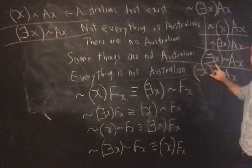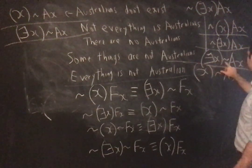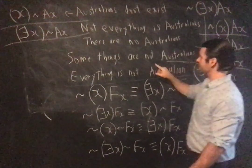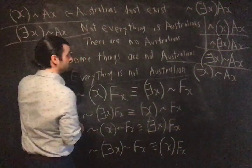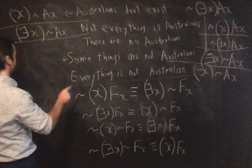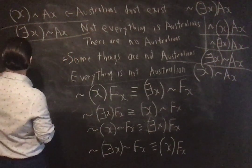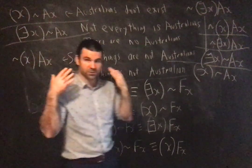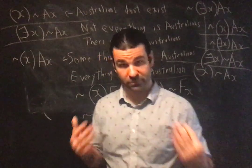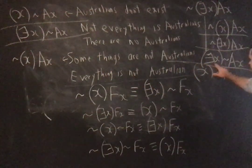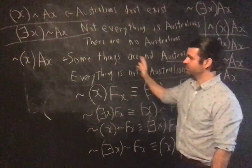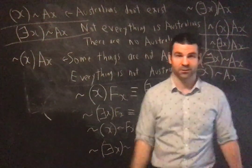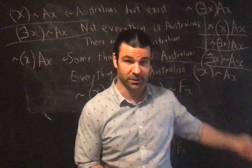Some things are not Australian — there exists an x such that not Ax. If some things are not Australian, it's not the case that everything is Australian. Sound those out in your head to convince yourself that those are logically equivalent. Some things are not Australian means not everything is Australian, and if not everything is Australian, some things are not Australian.